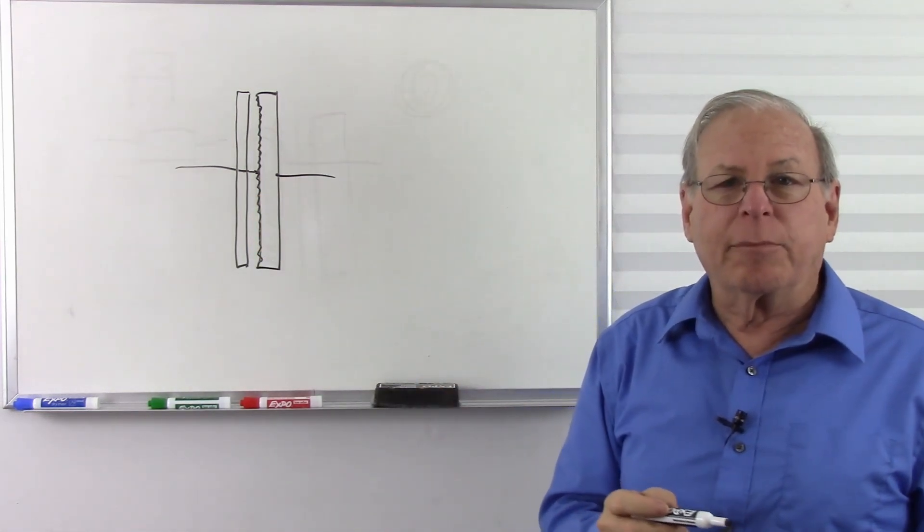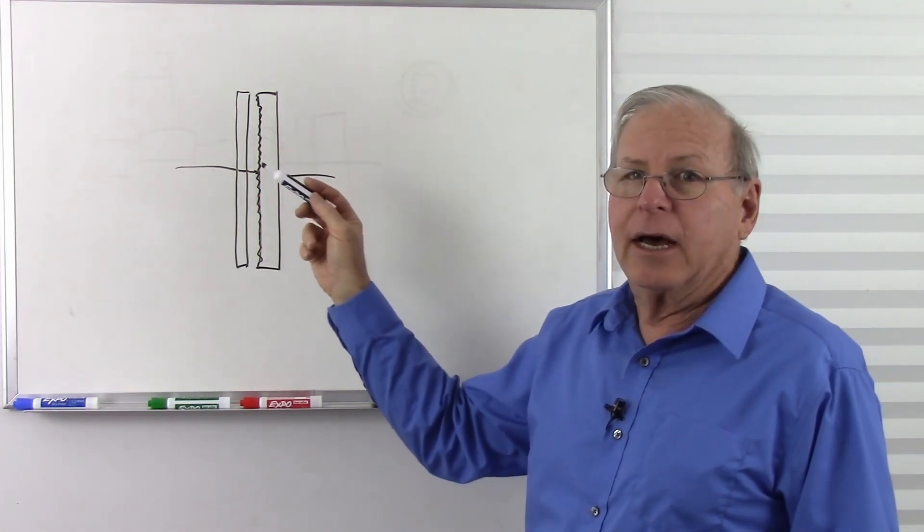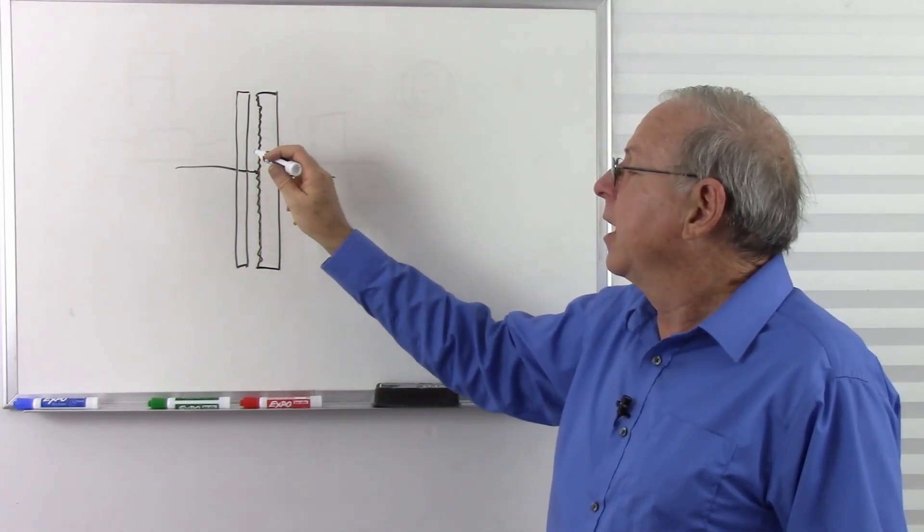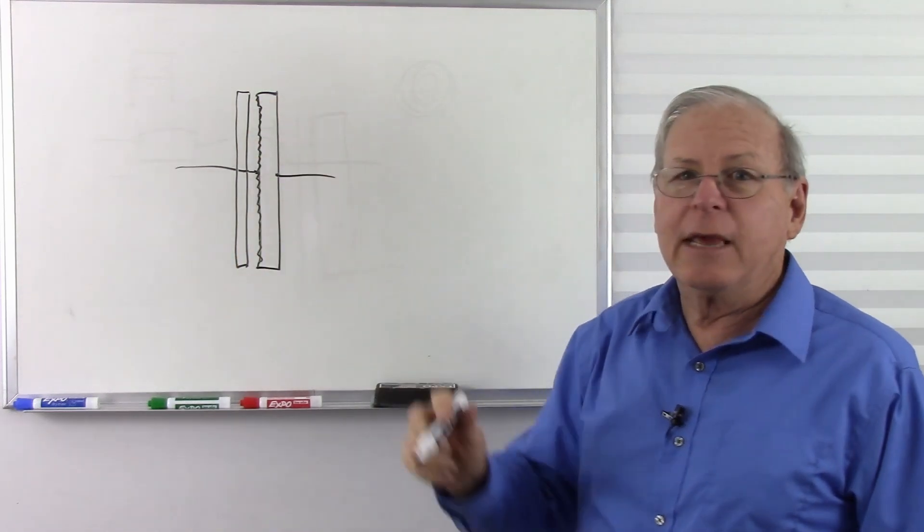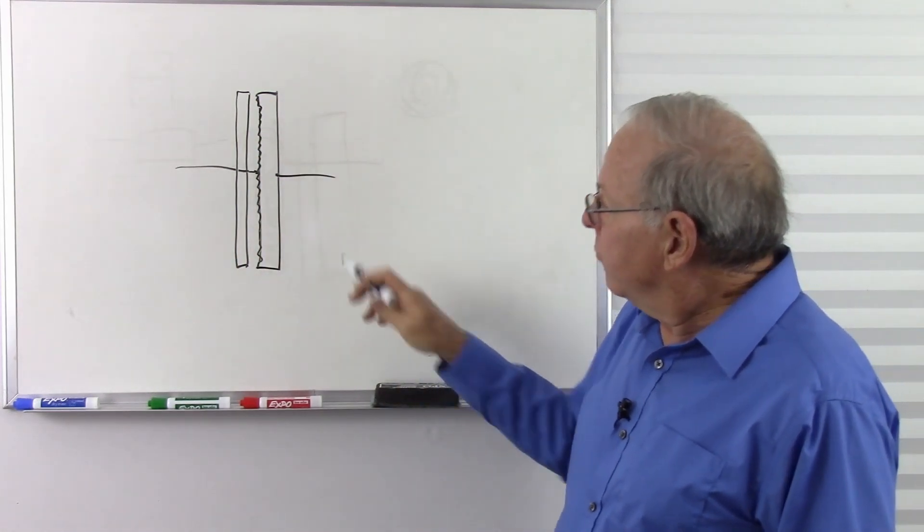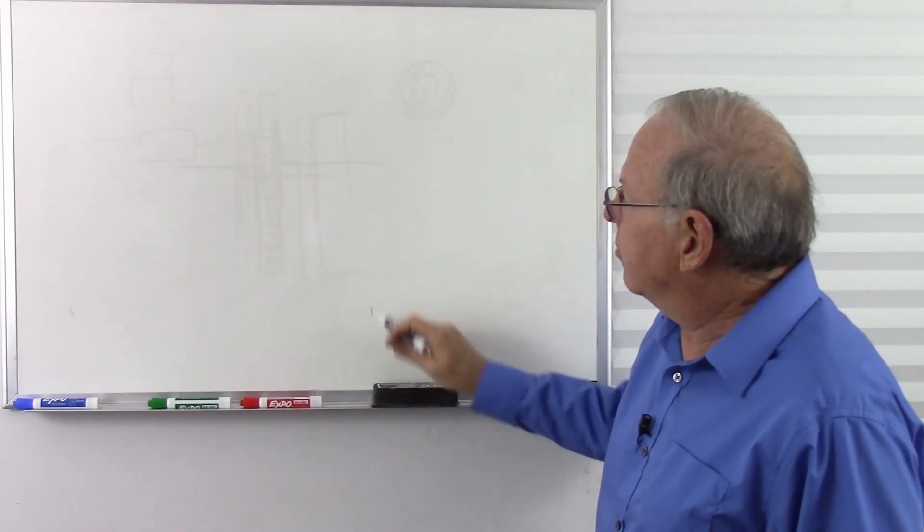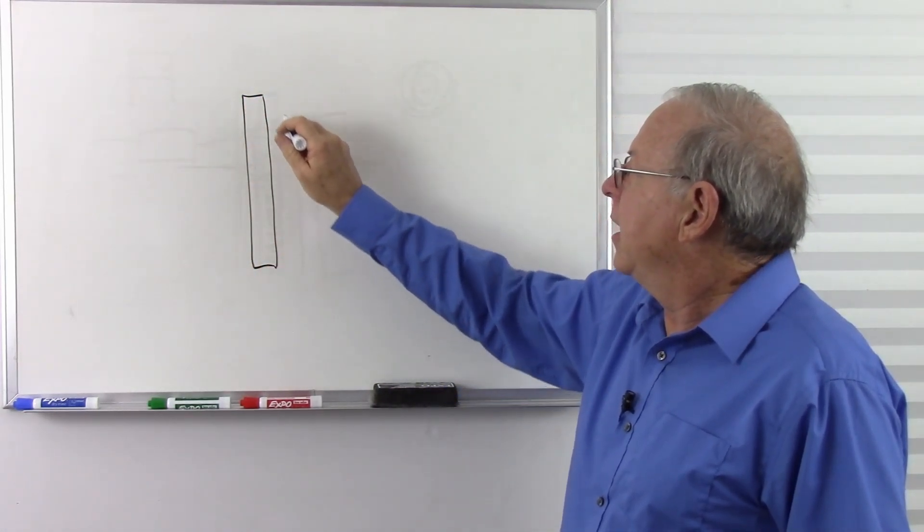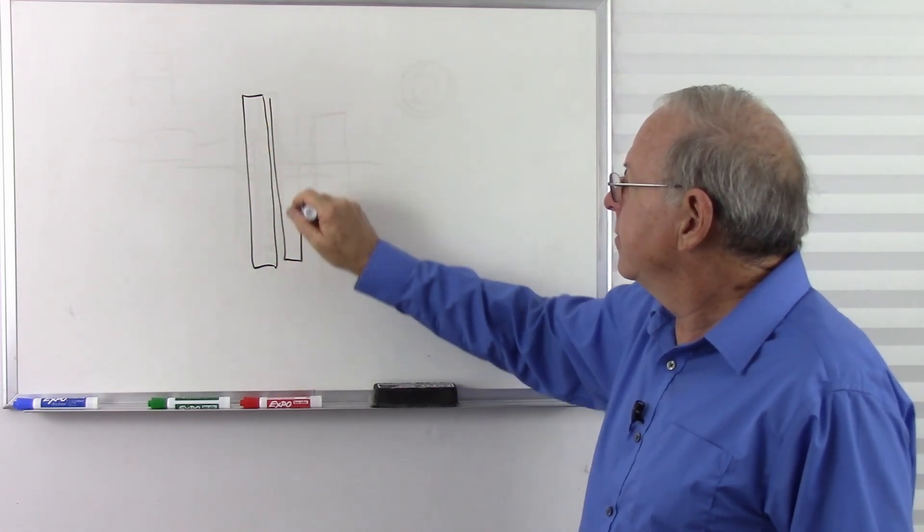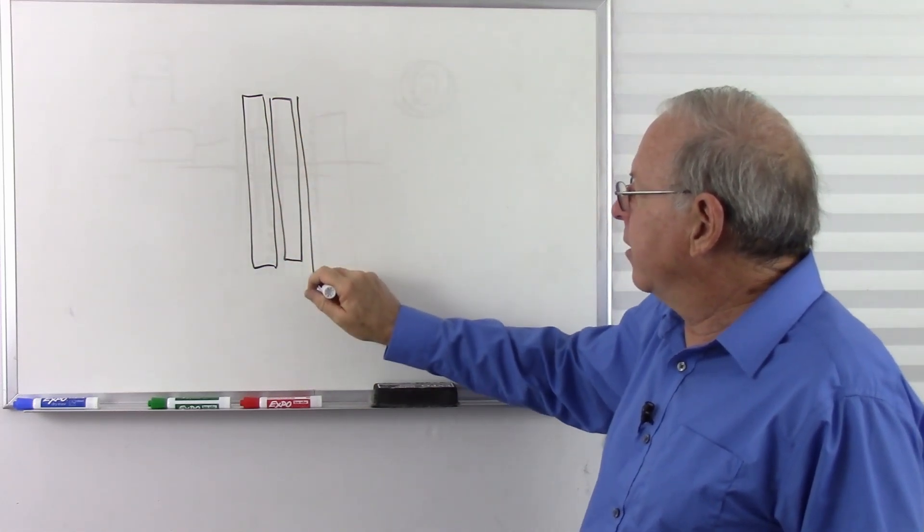And we pass current through the electrolyte, the acid or basic solution, and that causes an oxidation layer to form on the metal. A very common construction is simply aluminum, with aluminum on both sides. And this is rolled up, and often there's paper in between to keep them separated.